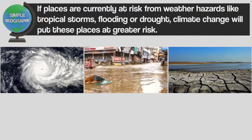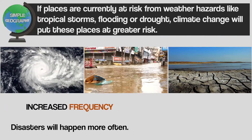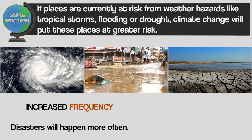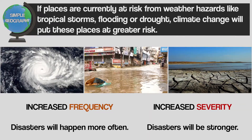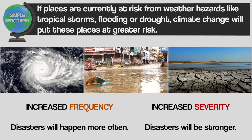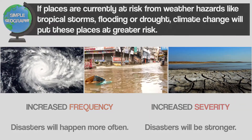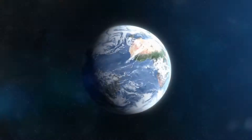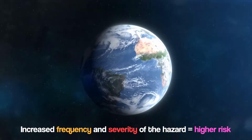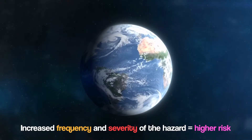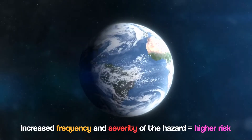This is because those hazards are much more likely to happen, which we call frequency, and when they do, they are probably going to be longer lasting and more powerful, which we call severity. As you can imagine, if hazards become more frequent and severe in some parts of the world, we would say those places are at higher risk.